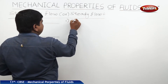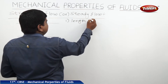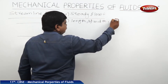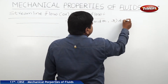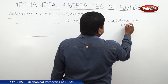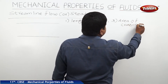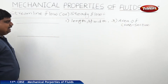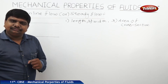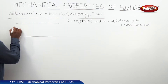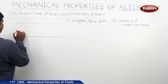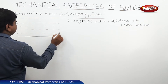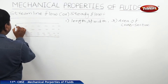So, length, width, and the third one is area of cross section — these three are the main important dimensions for a tube. Now, some amount of water is flowing through this tube from one end to the another end with some velocity.